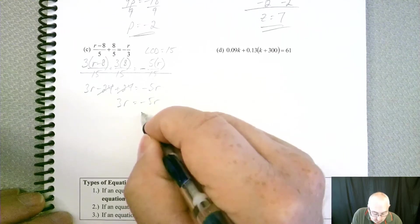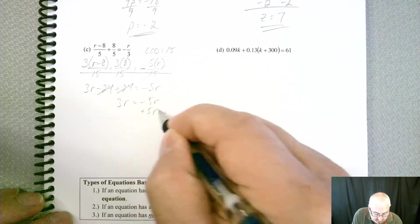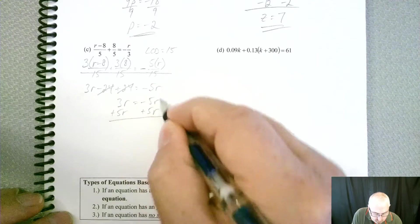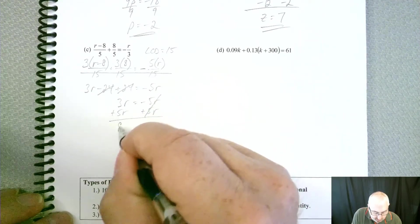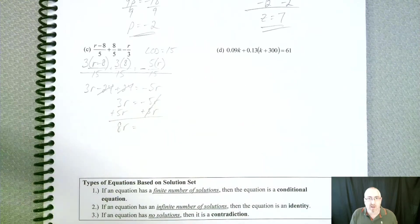So if we do the opposite and add 5R, that cancels them out. And over here, we've got 8R. So now what's on the other side?